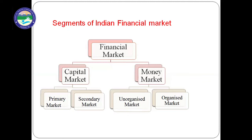Short-term means the maturity period is less than one year. Further, we studied that Capital Market has two complementary markets: Primary Market and Secondary Market. Primary Market is a market where securities are issued for the first time. It is also called New Issue Market, where first time shares are issued to raise fresh capital. And in Secondary Market, the securities which are already in the market are traded in the stock exchange — buying and selling of already existing shares takes place.